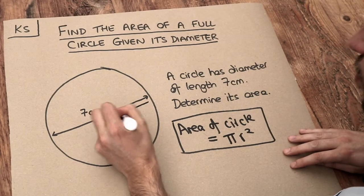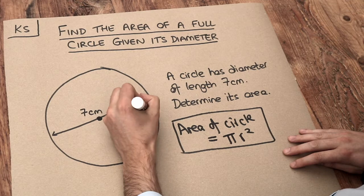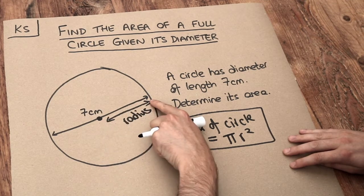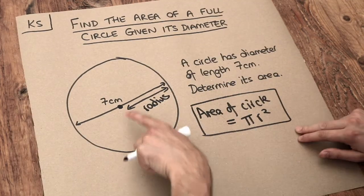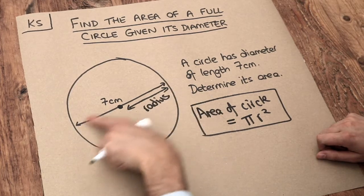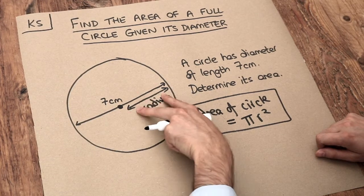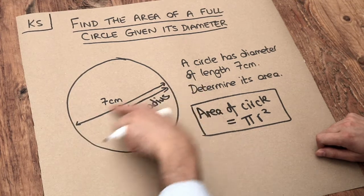Now remember that this is the radius here. It's the line from the centre of the circle to the circumference of the circle. And can you see that the diameter of the circle is twice the length of the radius. That two of those radiuses make up the diameter.